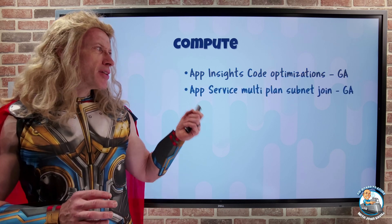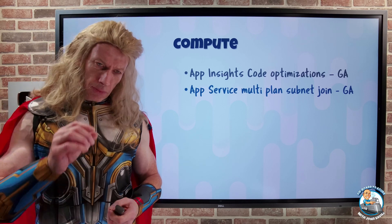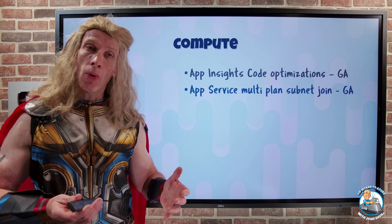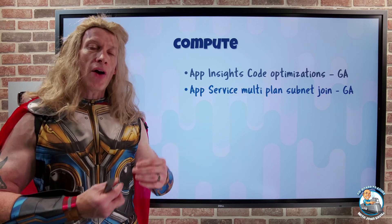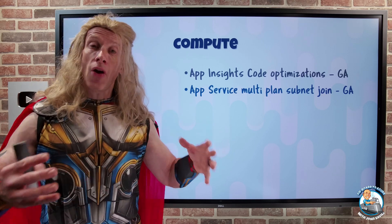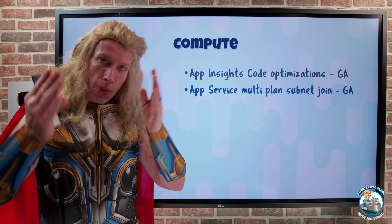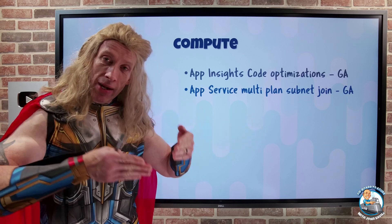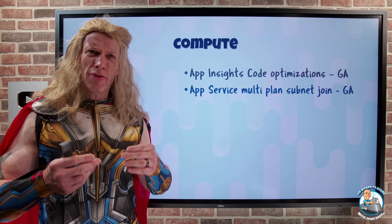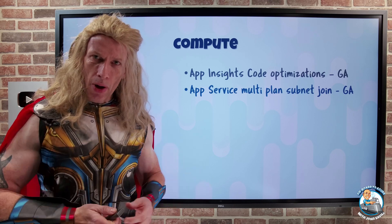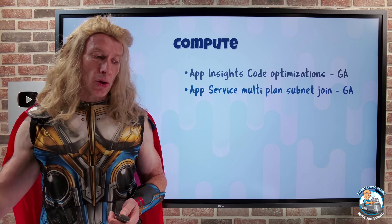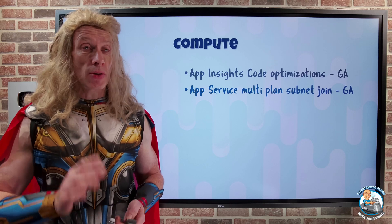The App Service Multiplan Subnet Join has gone GA. Ordinarily, if we want to integrate an App Service Plan with a virtual network, it requires its own dedicated subnet. So if I had lots of App Service Plans, I'd require lots of subnets and end up wasting a lot of IP space. This now enables you to have multiple App Service Plans sharing that subnet. The subnet has to be a /26 minimum, and every App Service Plan you integrate with the virtual network will use up one IP. You need to plan the size of that subnet based on how many plans you want to integrate, and all those plans must be in the same subscription.